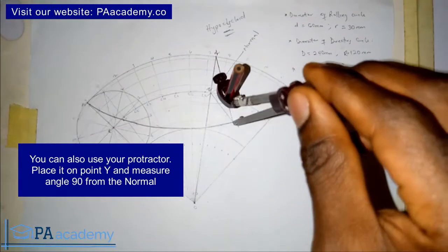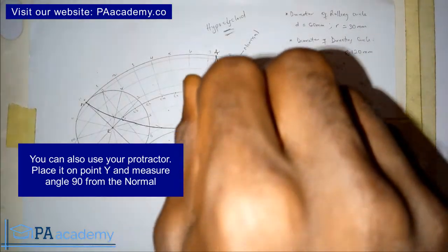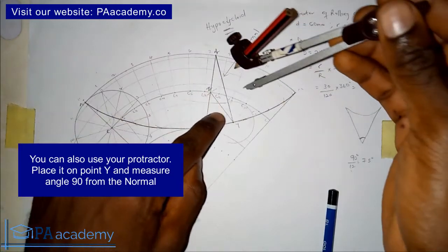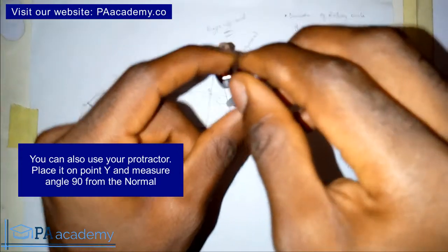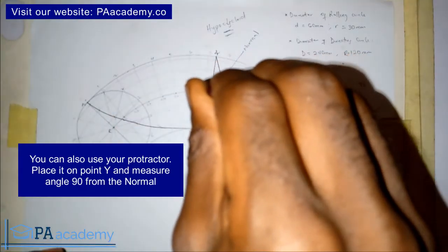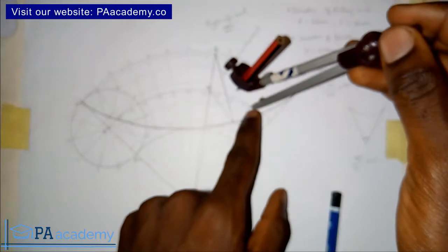With any convenient length on your compass, you draw a semi-circle. So here the semi-circle is touching the normal from that point. You draw an arc on the semi-circle where the arc is touching the semi-circle. With the same length, you place your compass and draw another arc.